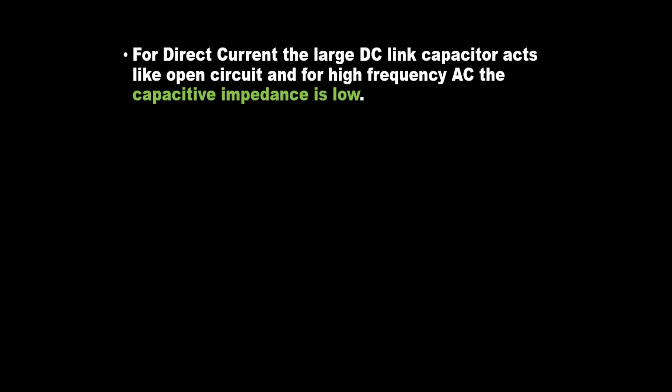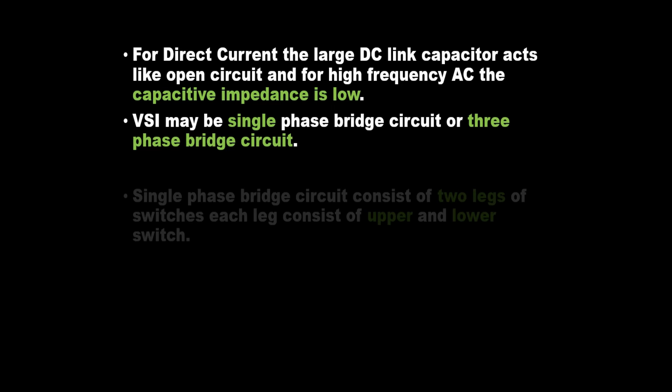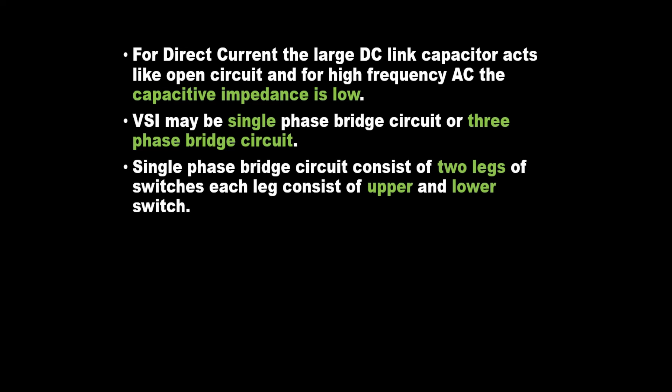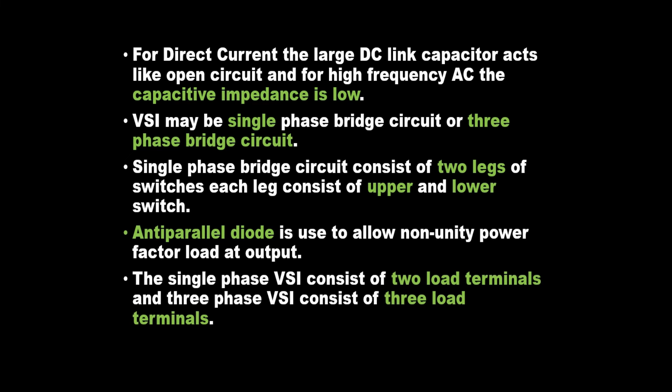For direct current, the large DC link capacitor acts like an open circuit, and for high frequency AC the capacitive impedance is low. VSI may be a single phase bridge circuit or three phase bridge circuit. A single phase bridge circuit consists of two legs of switches; each leg consists of an upper and lower switch. An anti-parallel diode is used to allow non-unity power factor load at the output. The single phase VSI consists of two load terminals and three phase VSI consists of three load terminals.